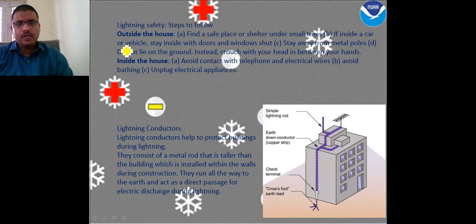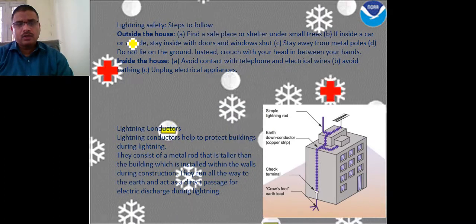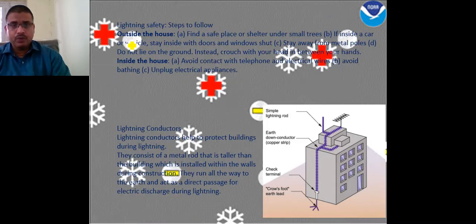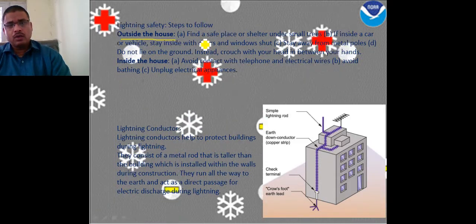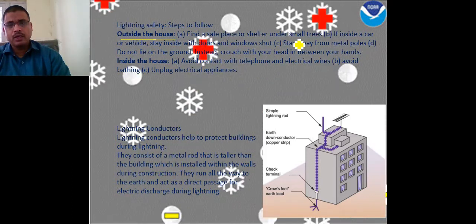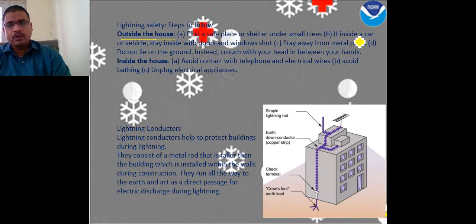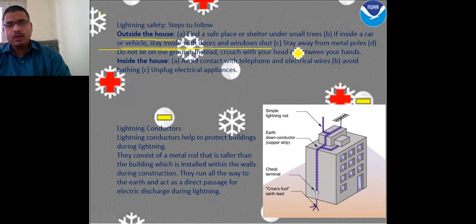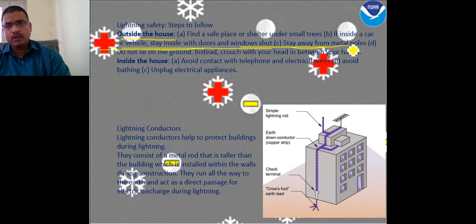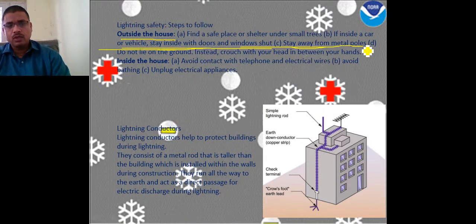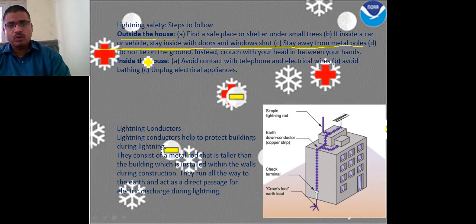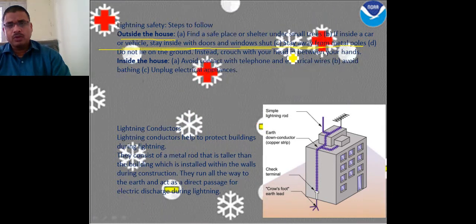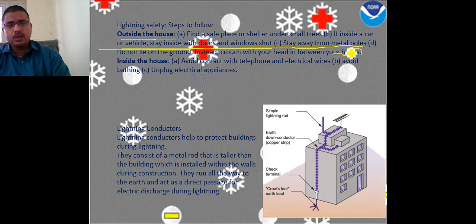When lightning takes place, here are some safety suggestions. If outside, find a safe shelter — avoid tall trees. If inside a car, stay inside with doors and windows shut. Stay away from metal poles, as metal attracts charges. Do not lie on the ground; instead, crouch with your head between your hands. Following these precautions can help keep you safe.